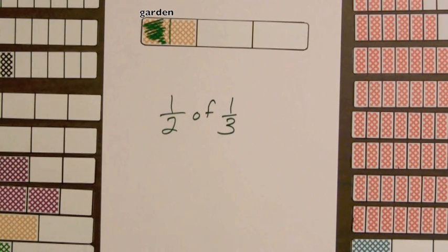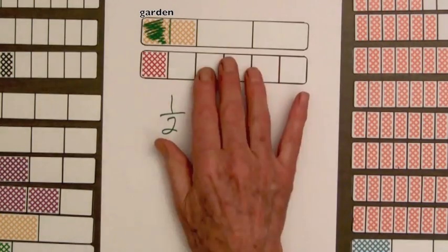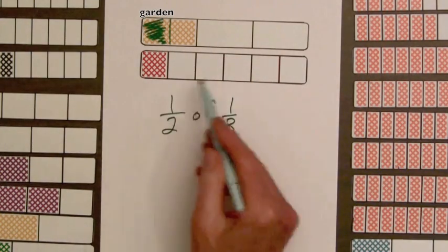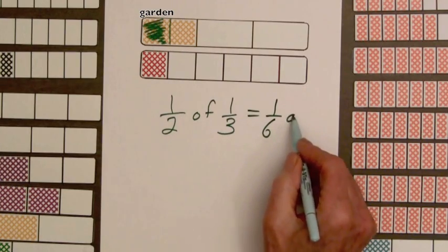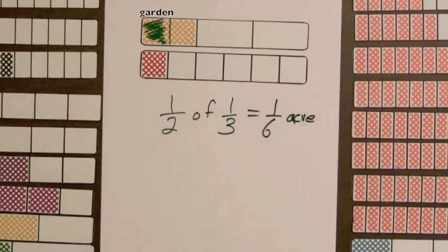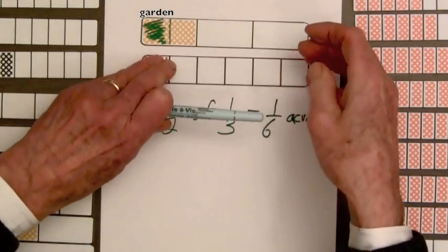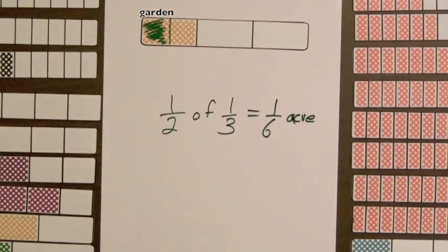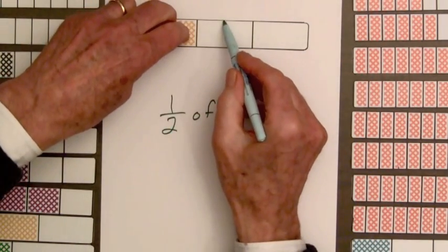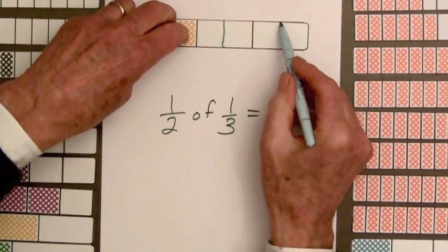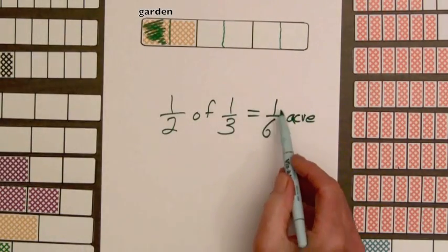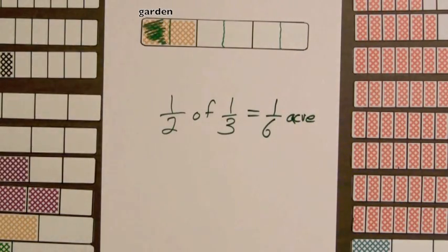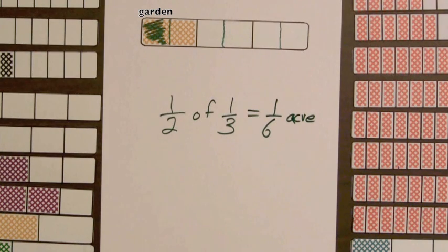We will put the garden on this part and we will write down the fractions one-half of one-third. Now there are several ways to find the amount occupied by the garden. We could use another bar that has the same shaded amount, one part out of six, one-sixth acre. Or we could continue by splitting the other parts of this bar so that we have six equal parts.